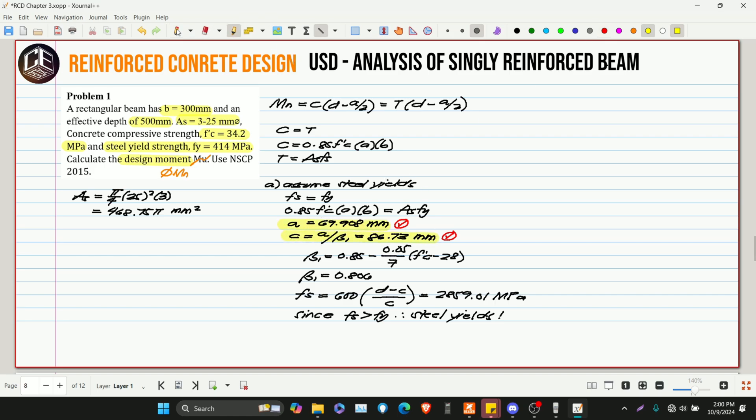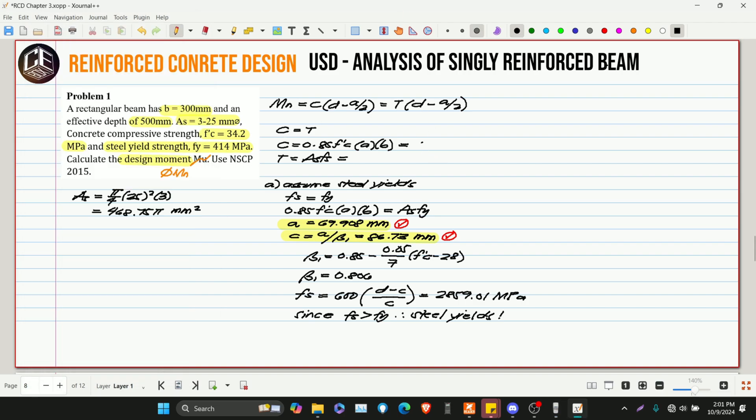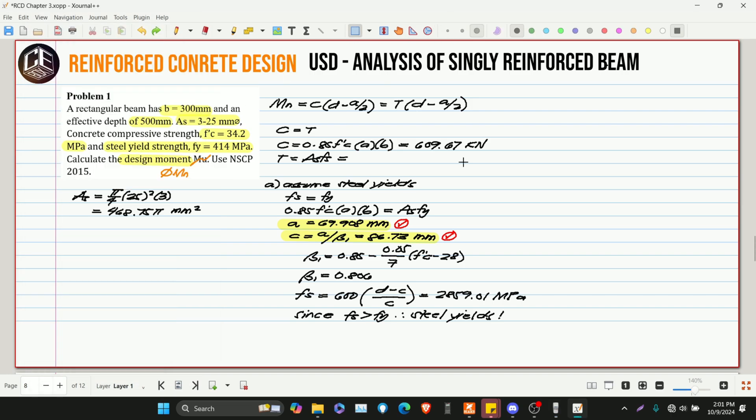So, since meron na tayong A, masasolve na natin yung C and force T. So, dapat equal lang yan. So, 0.85 F'C na 34.2 multiplied by A na 69.908 multiplied by B. Tapos, i-divide natin ng 1,000 para maging kilo Newton. So, 609.67. So, check natin kung mag-equal sila. Kasi, equilibrium to. So, AS 468.75 pi multiplied by FS. So, since nag-yield tayo, ang ating FS is FY. So, 414 then divided by 1,000. So, this is equivalent to 609.67. Same lang.